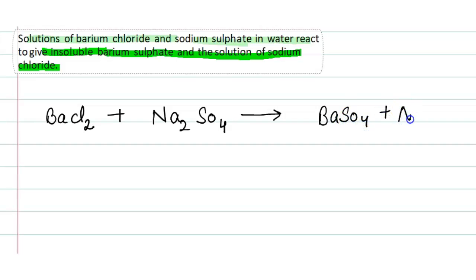Now balance this. So we have Ba - in the reactants barium is 1, and in the products barium is also 1. Cl - chlorine is 2 in the reactants, and here in NaCl...